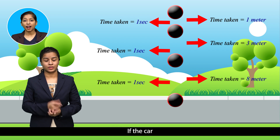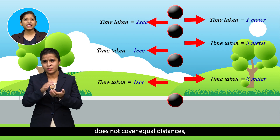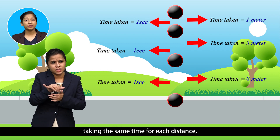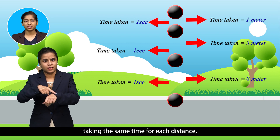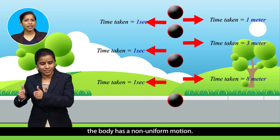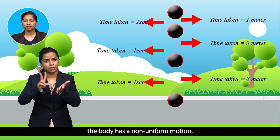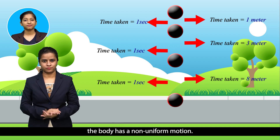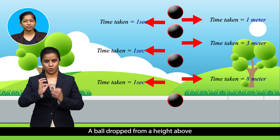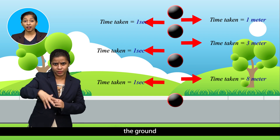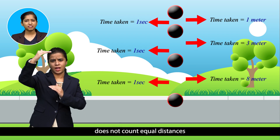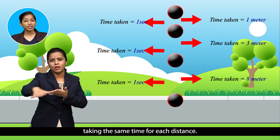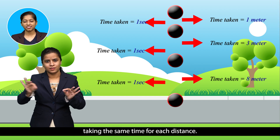If the car does not cover equal distances taking the same time for each distance, the body has non-uniform motion. A ball dropped from a height above the ground does not cover equal distances taking the same time for each distance — this is an example of non-uniform motion.